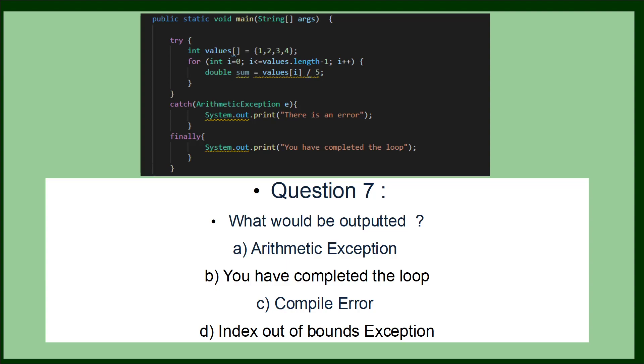Question seven is talking more about exceptions, but also using the try, catch, finally statement. So what would be the output from that? You have completed the loop because it does not fall into that arithmetic exception, so there will be no exception there and it will just go into the final segment.